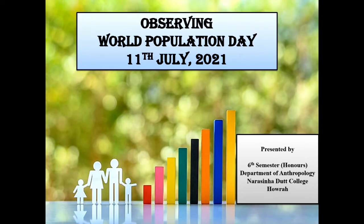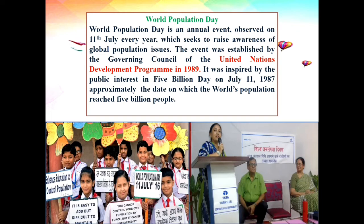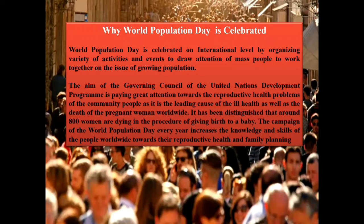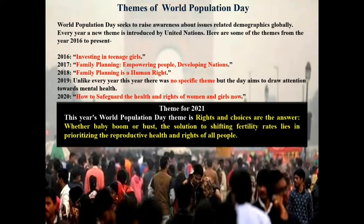Observing World Population Day, 11th July 2021. The event was established by the Governing Council of the United Nations Development Programme in 1989. The day is celebrated to draw attention on various population-related issues like family planning, gender equality, poverty elimination, maternal health, human rights, etc. Every year, a new theme is introduced by the United Nations. This year, the theme is 'Rights and Choices are the Answer.' Whether baby boom or bust, the solution to shifting fertility rates lies in prioritizing the reproductive health and rights of all people.